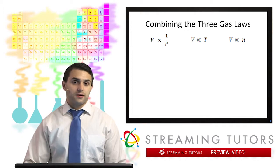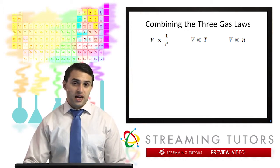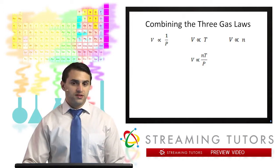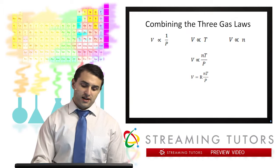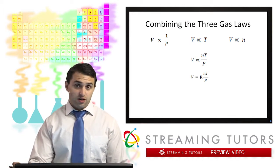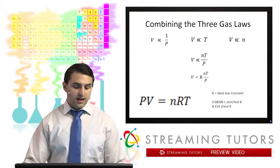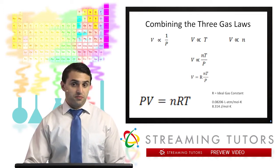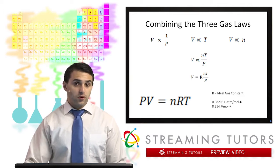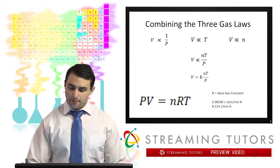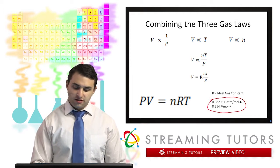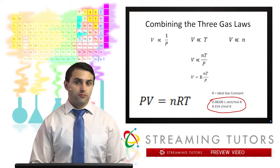We can take these three gas laws and combine them to find a universal expression for describing a gaseous system. Combining all three relationships, we can say that volume is proportional to moles times temperature over pressure. To get rid of that proportionality, we add a constant — the universal gas constant R. Rearranging, we get the ideal gas law: PV = nRT, meaning the pressure times the volume equals the moles of gas times R times T. R is the gas constant, equal to 0.08206 liter·atmospheres per mole·kelvin, or 8.314 joules per mole·kelvin. The difference between those is just the units.